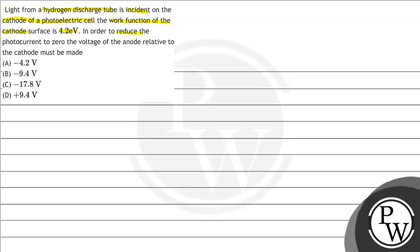In order to reduce the photo current to zero, the voltage of the anode relative to the cathode — suppose this is a photoelectric cell. Imagine that an electron is moving from the cathode to the anode. If we stop this electron, it will have kinetic energy because it is moving. So if we give it a force in the opposite direction equal to that kinetic energy, then it will stop.